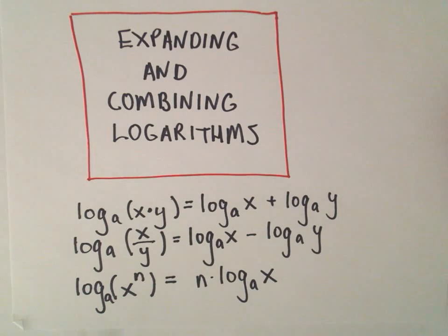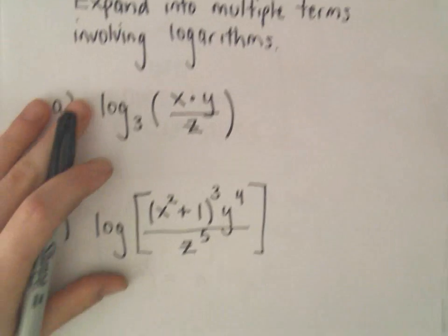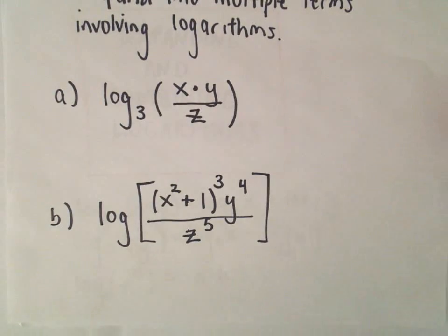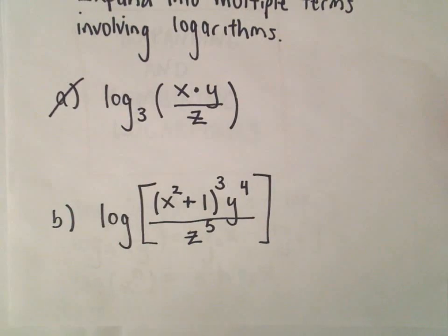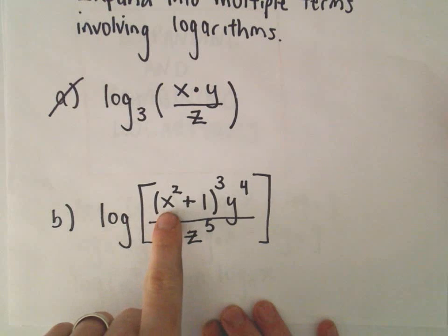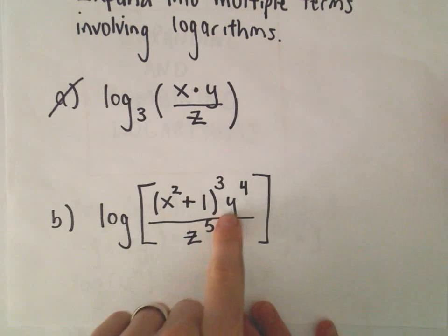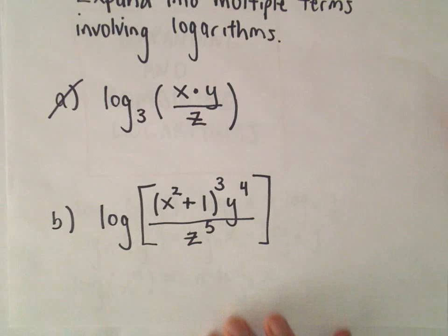All right, so another example of expanding a logarithm, and here we're going to do part B. So we've got the logarithm of the quantity x squared plus 1 cubed times y to the fourth all over z to the fifth.